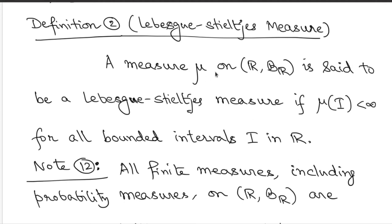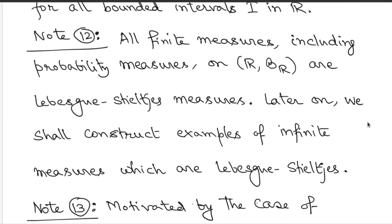Examples of Lévy-Stieltjes measures include any finite measure, since the total mass is finite and all bounded intervals will have finite mass. In particular, all probability measures are examples. The interesting question is: are there infinite measures which are Lévy-Stieltjes? We will see such examples.